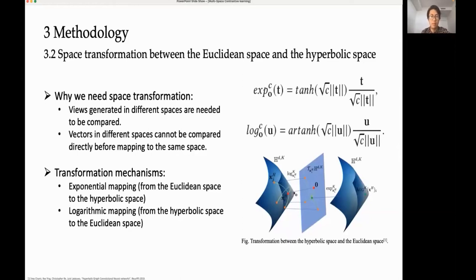To obtain informative semantics of different views of the input graph in different spaces, because there are different representation abilities among various spaces, embeddings in different spaces cannot be compared directly unless mapping one of them to another space. Therefore, before comparing embeddings in different spaces, we need to conduct space transformation. Specifically, we use exponential mapping mechanism to map the Euclidean vector to the hyperbolic vector.